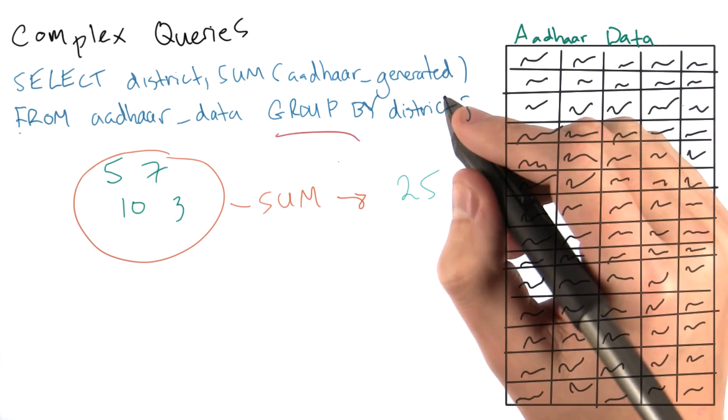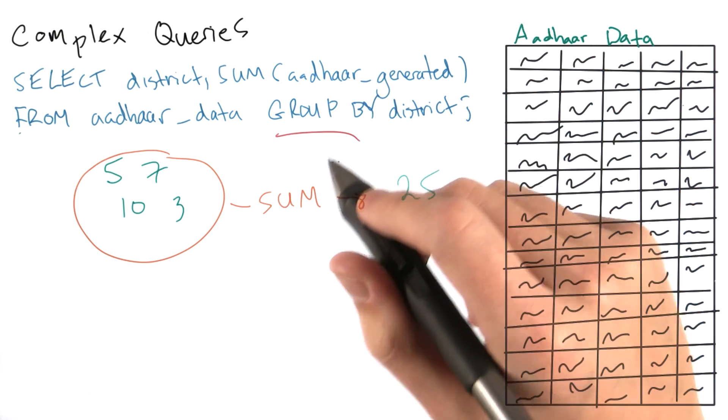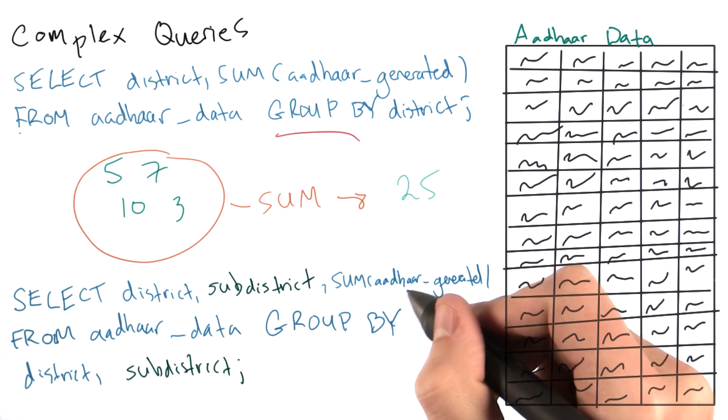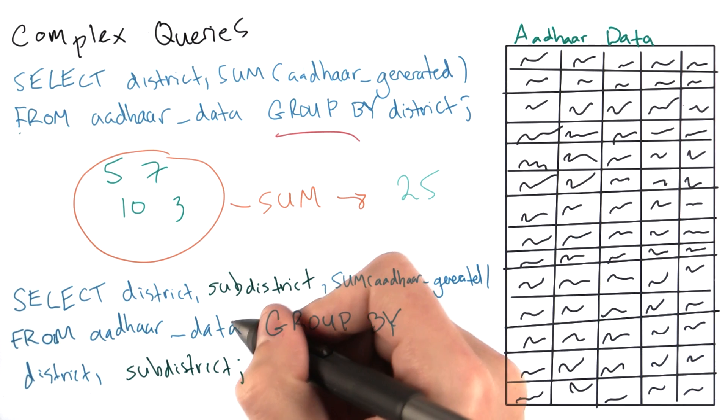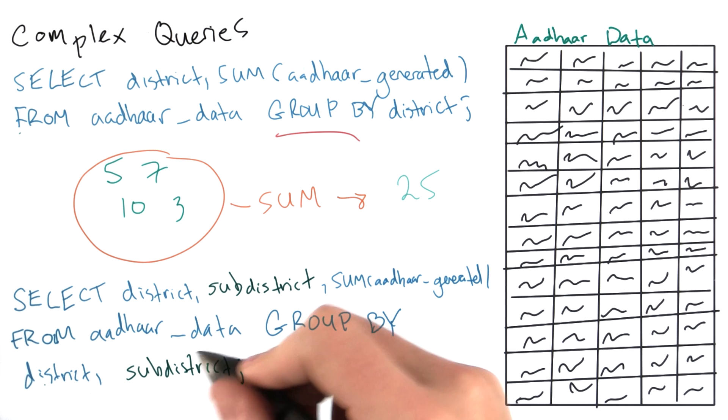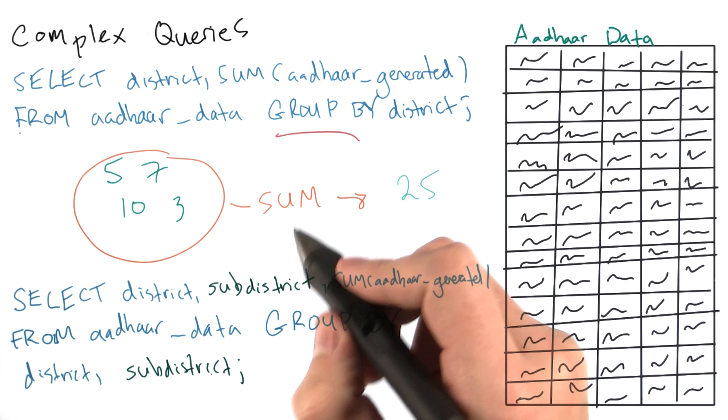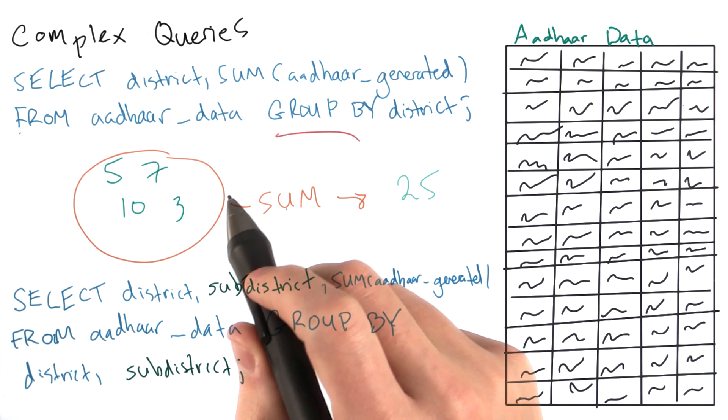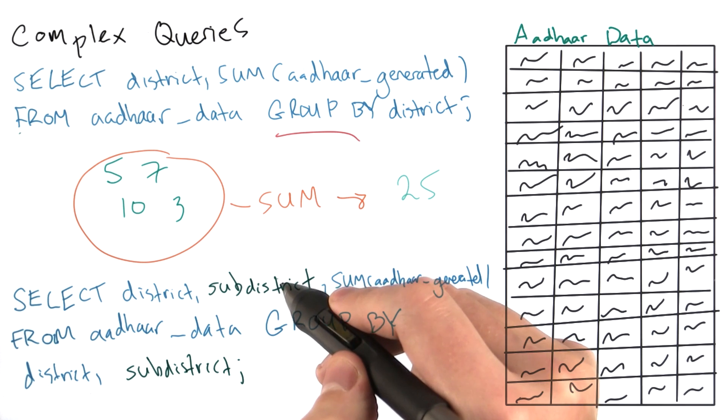There can be numerous clauses in a GROUP BY. So we could also say this: SELECT district, sub-district, sum Aadhar generated FROM Aadhar data, GROUP BY district, sub-district. Note that whatever columns we select that we don't aggregate, we need to group by. In this case, district and sub-district.